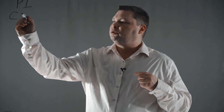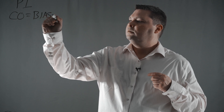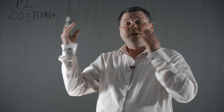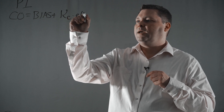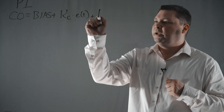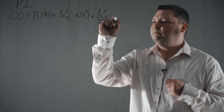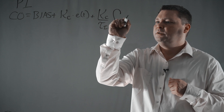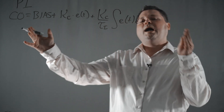So let's start with the equation. With a PI controller, we have a controller output equal to the bias value plus the proportional part — the P-only part — which is your controller gain times your error. We then introduce the integral portion: this is Kc over reset time, times the integral of E(t) dt. This is the PI equation.